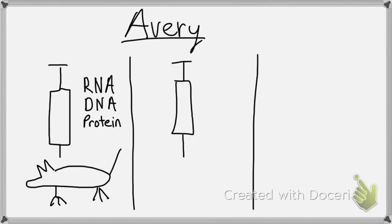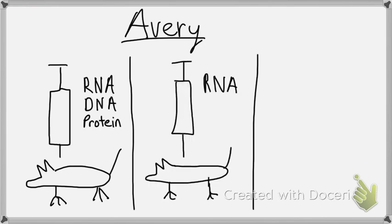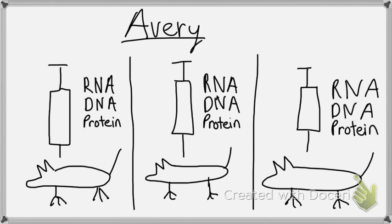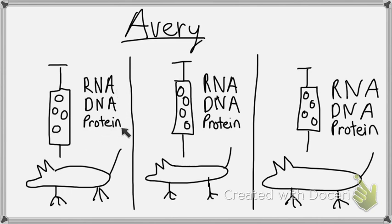Avery set up an experiment where he was going to test, by process of elimination, which one of those must store the genetic material. He took the smooth bacteria from Griffith's experiment and put it in each of his syringes. The smooth bacteria contained RNA, DNA, and protein, and Avery knew the smooth bacteria would kill the rats.